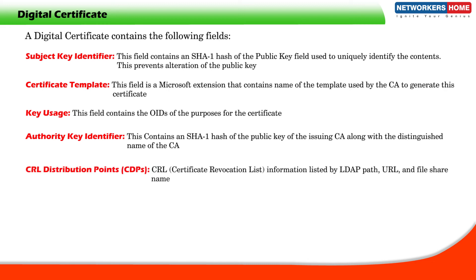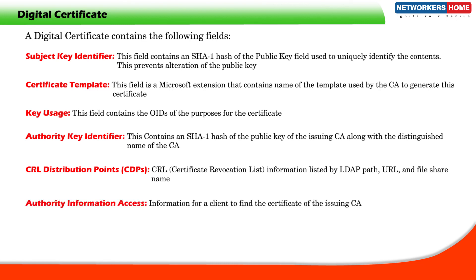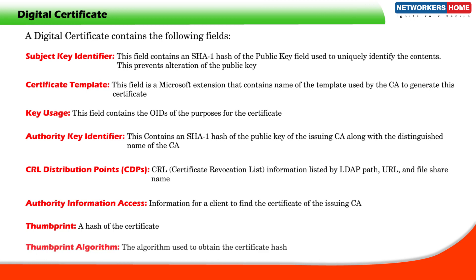CRL Distribution Points (CDPs): Certificate revocation list information listed by LDAP path, URL, and file share name. Authority information access: Information for a client to find the certificate of the issuing CA. Thumbprint: A hash of the certificate. Thumbprint algorithm: The algorithm used to obtain the certificate hash.